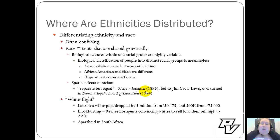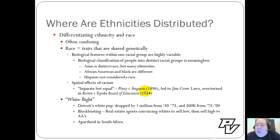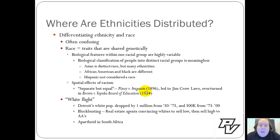It's very important not to confuse ethnicity and race. Race is something shared genetically and biologically, but biological classification into distinct racial groups is largely meaningless — for example, Asian is considered a distinct race but there are many ethnicities within it. African American and black are not the same; many people of the black race are not African American, having come from the Caribbean. It should also be noted that Hispanic itself is not considered a race.